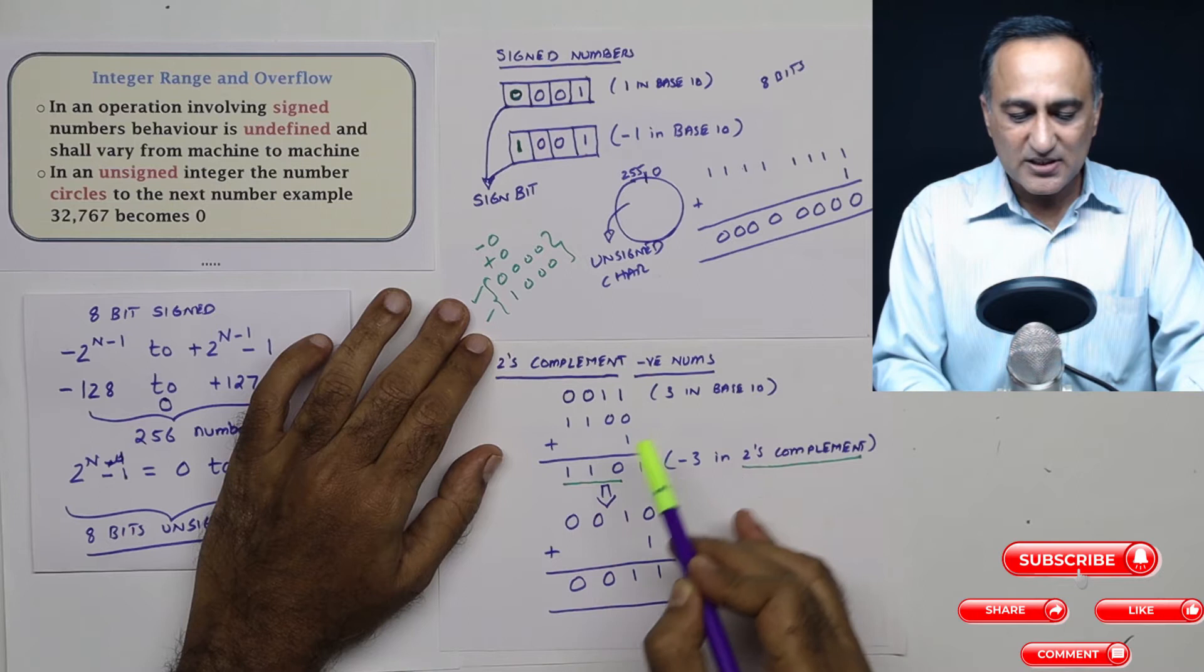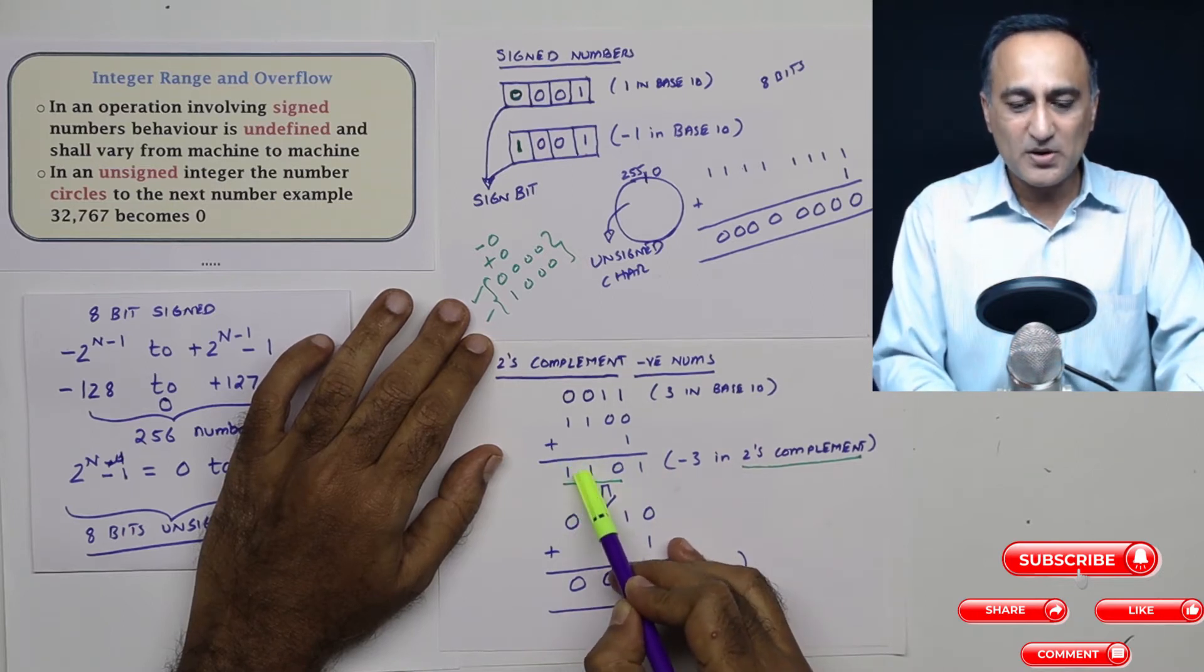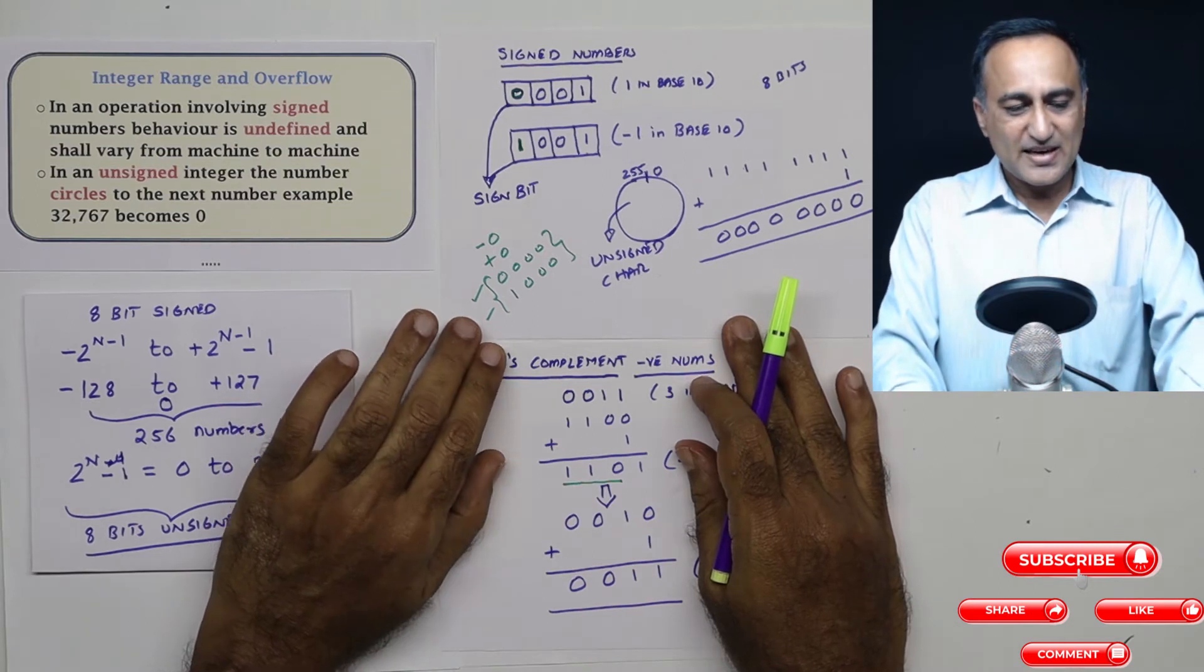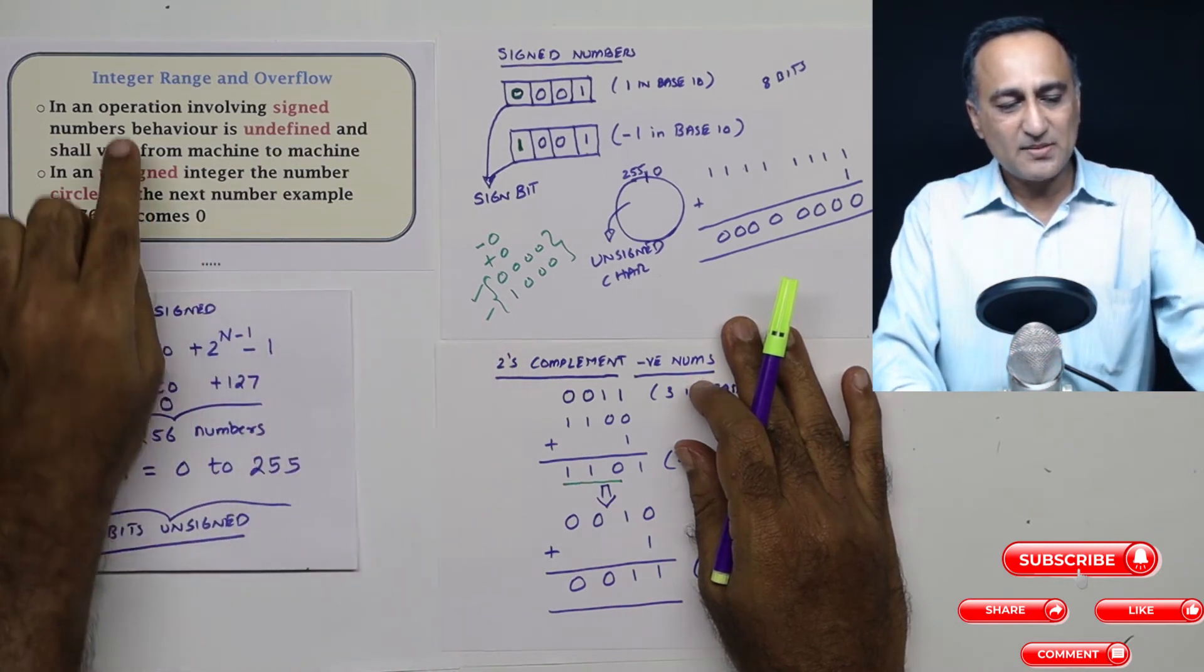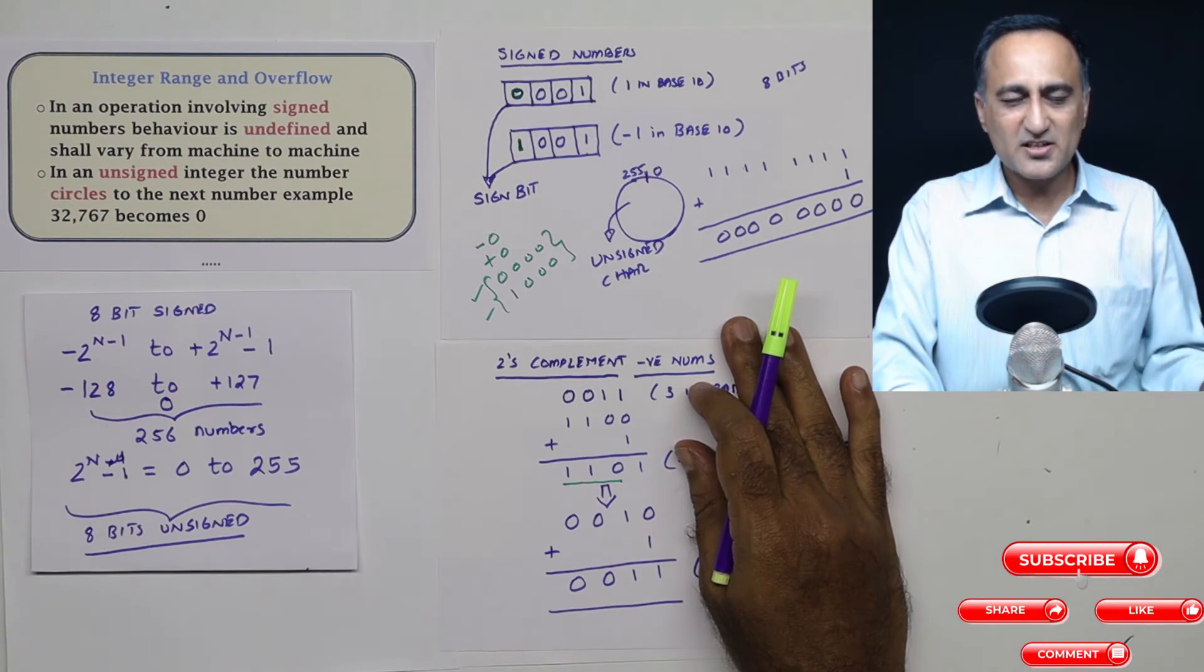In two's complement, you will see that the negative number, the last most bit will generally be, in fact will always be one. Now there's another terminology you need to understand called the range. I had briefly told you in the previous integer discussion, but I'll just give you a refresher on that.